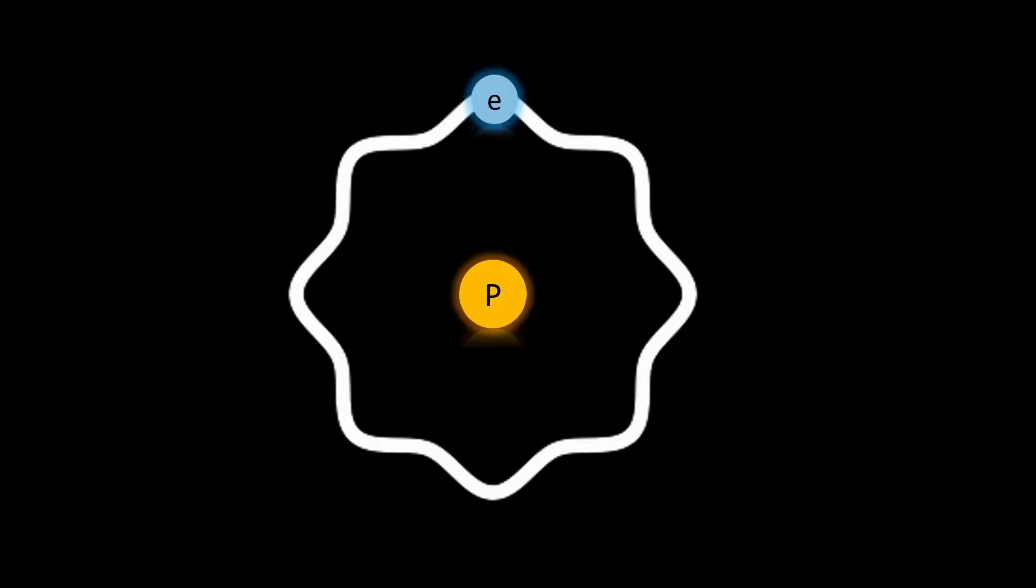So now we can think of an electron as a singular particle, but it's moving on this wave path. You can imagine it's going to be hard to find its radius because the radius will be changing.